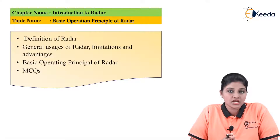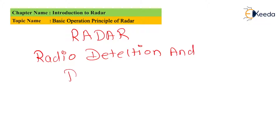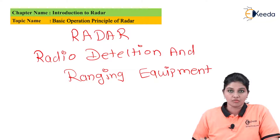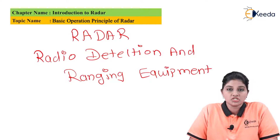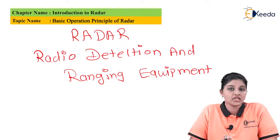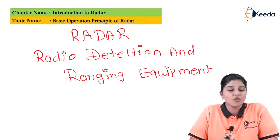Radar basically stands for Radio Detection And Ranging equipment. Radar was initiated originally in World War Two, during which there was a need for the military to keep an eye on the enemy's activities and movement. The development of radar at that time acted as an electronic eye for keeping watch on the enemy's movement and actions.